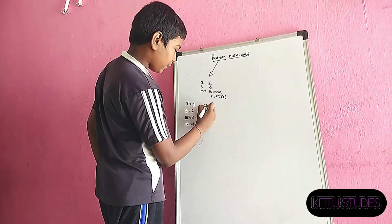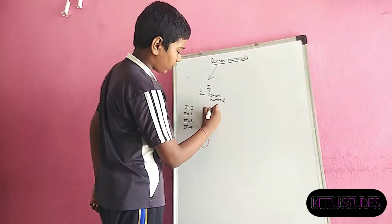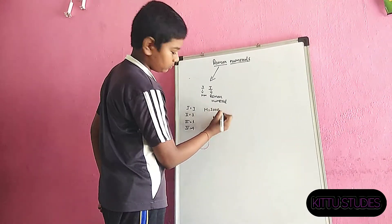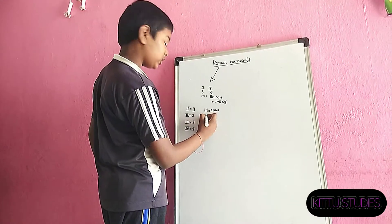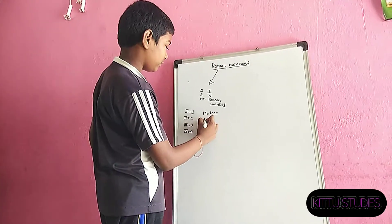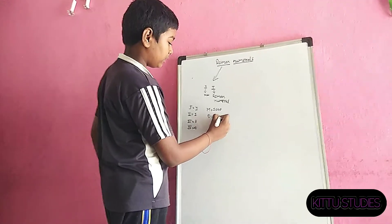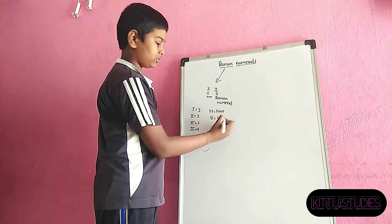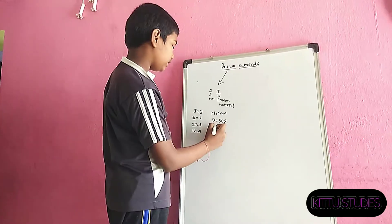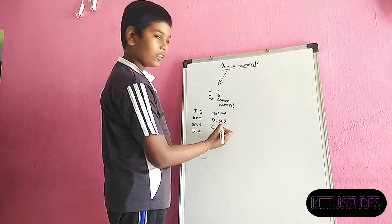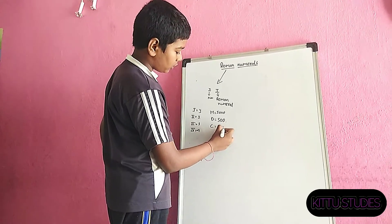What is mean by M? M means thousand. What is mean by D? D means 500. What is mean by C? C means 100.